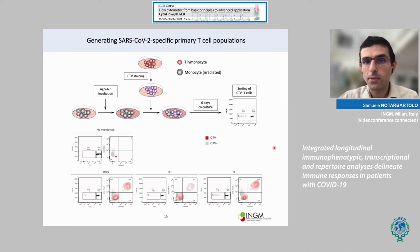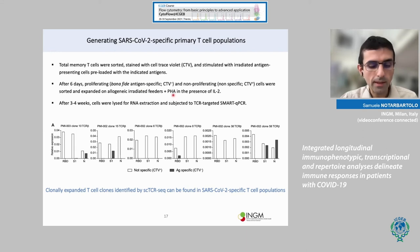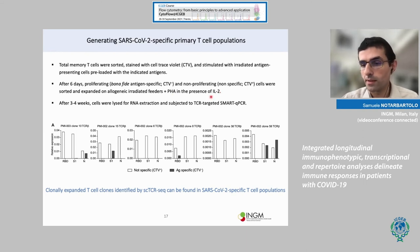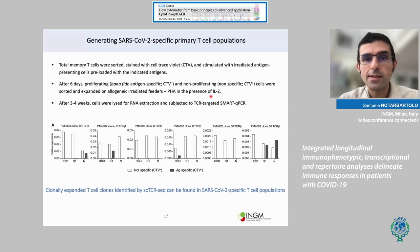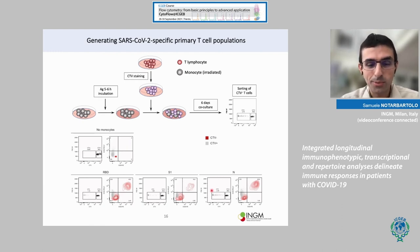Once we did this co-culture, we sorted out the two populations for each antigen — Cell Trace Violet-positive and negative — and expanded them with allogeneic irradiated feeders and phytohemagglutinin, which are strong mitogenic stimuli to let cells proliferate in the presence of interleukin-2, a necessary survival and proliferation factor for T cells. This expansion was essentially to have enough material to perform our experiments, because from the sorting we got only 50 to 500 cells.